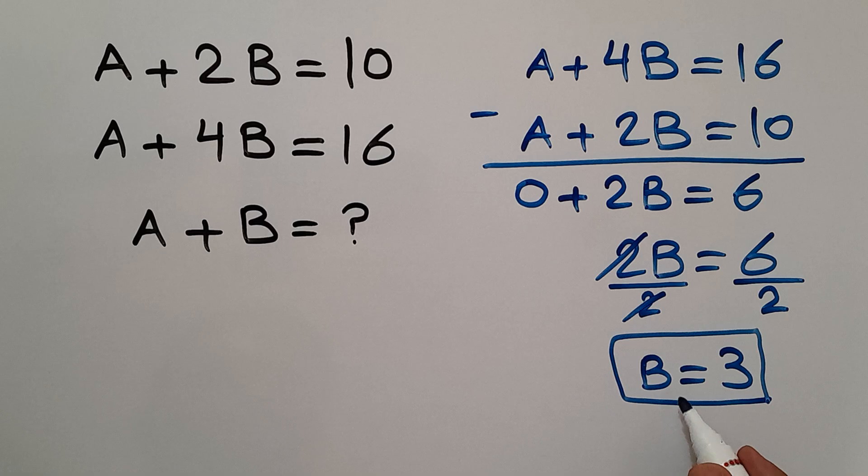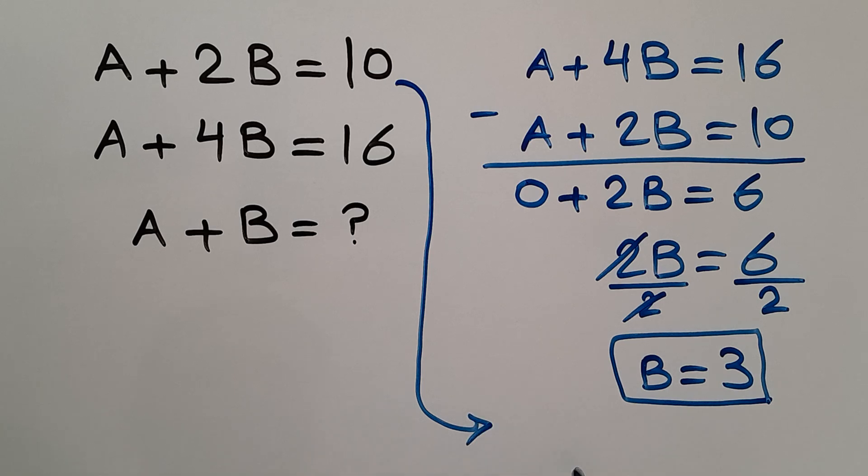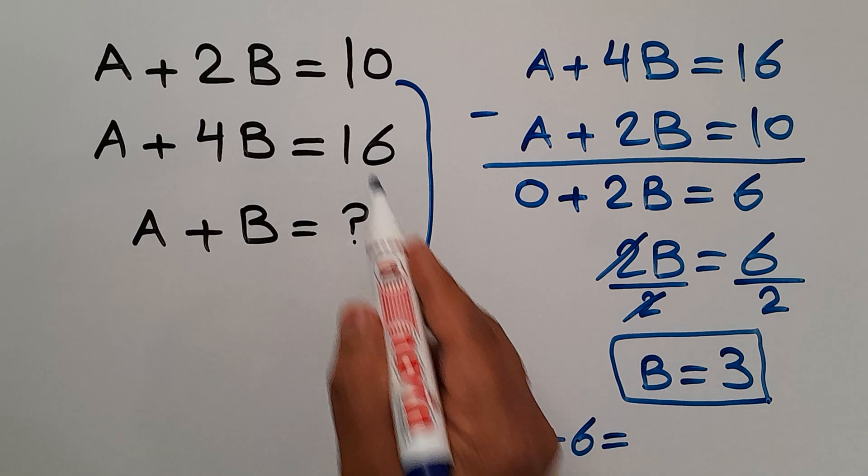Now let's plug this value we got for B into the first equation. Okay, A plus 2B, so A plus 2 times 3 which equals 6, so A plus 6 gives us 10.